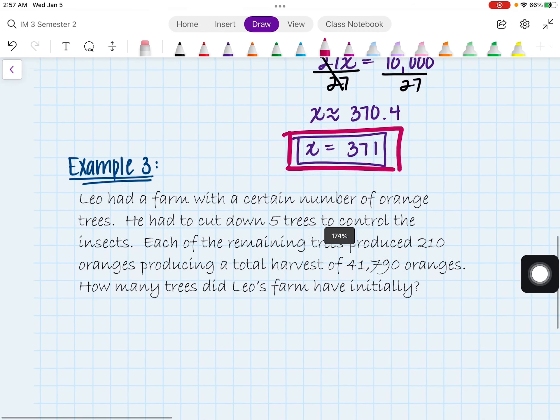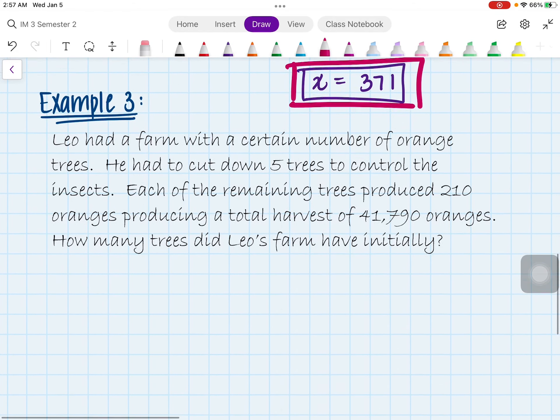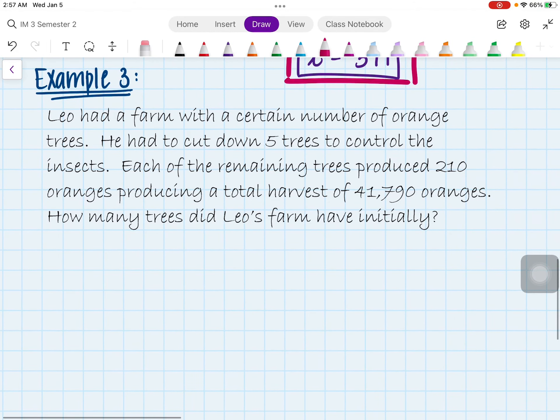All right, so first off, the first thing I want to do here is label our variables. So a few things here. We are given trees. So in this case, I'll have t representing trees. All right, trees. And this, in this case, is going to be representing our input, which is what we're putting into our equation here.